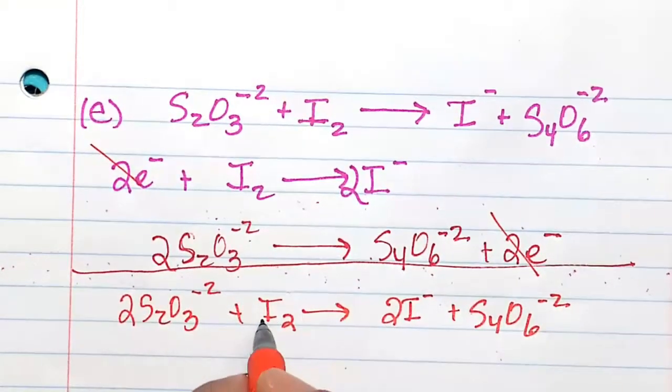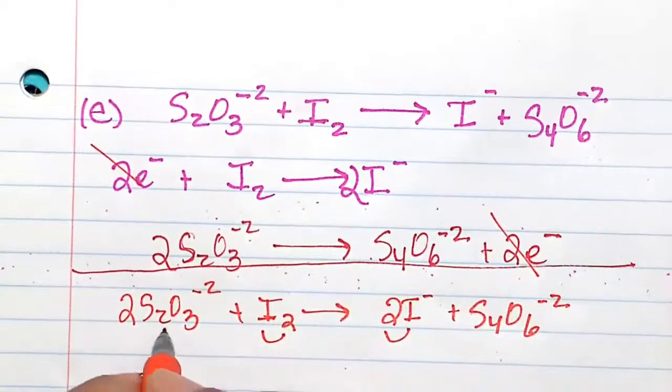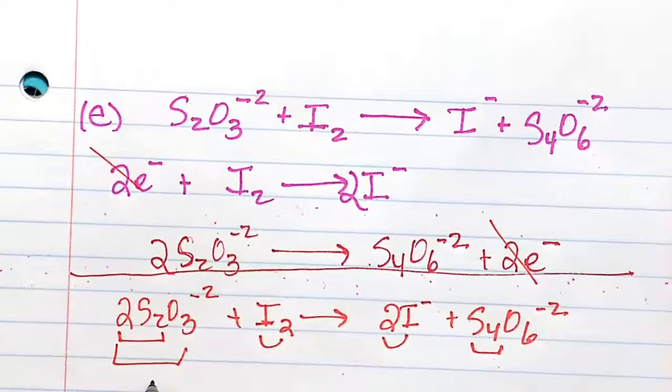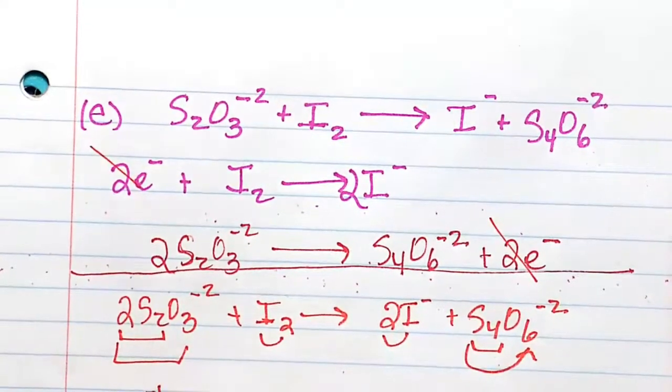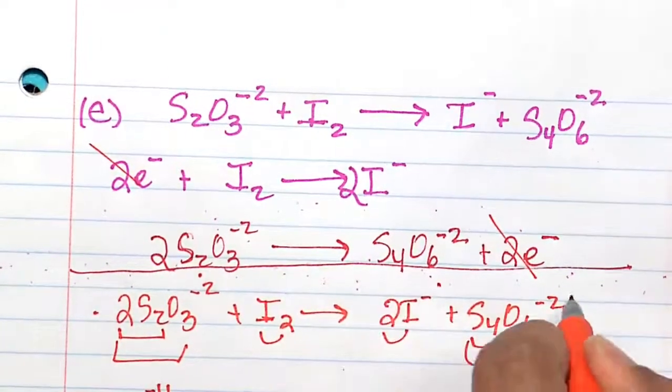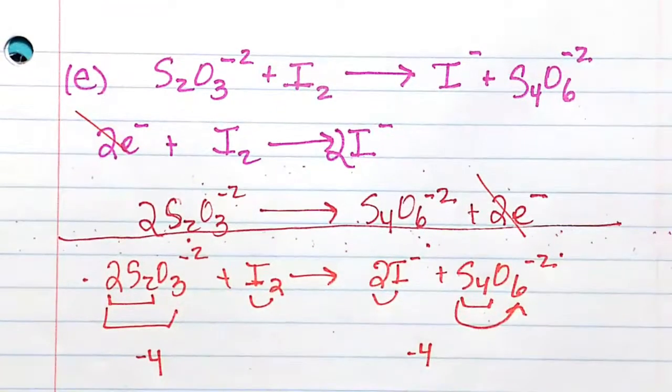Let's double check and make sure everything is okay now. 2I, 2I is good. 4 sulfurs, 4 sulfurs is good. 6 oxygens, 6 oxygens is good. Now we've got to balance the charge. Minus 4, 2 times minus 2 is minus 4. Minus 2 minus 2 is minus 4. So this is the balanced chemical equation.